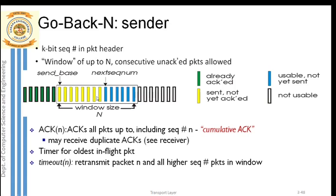To summarize: from base to next sequence minus 1 are all packets already sent but acknowledgement not received - unacknowledged packets. From next sequence number to base plus n minus 1 are packets which can be sent but not yet sent. Base plus n minus 1 is the last packet inside the window. Base plus n points outside the window - packets which can never be sent.